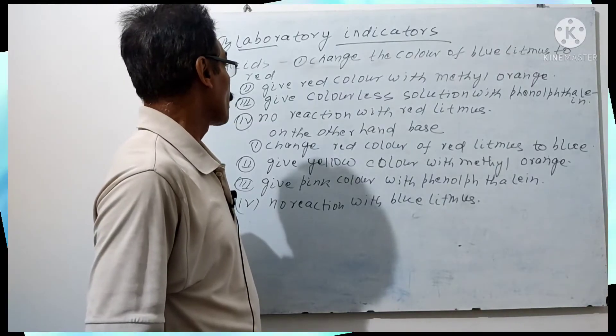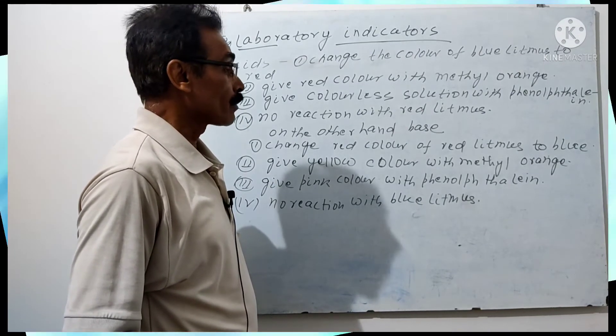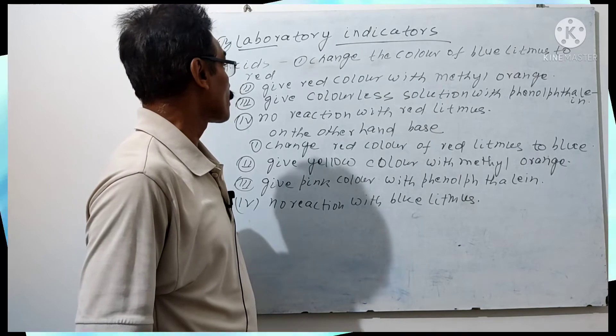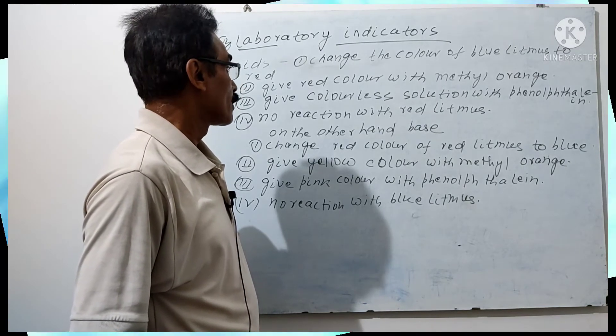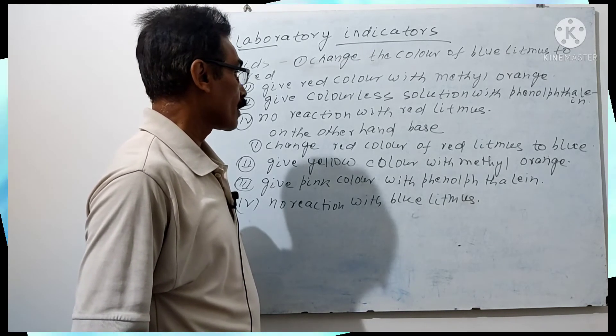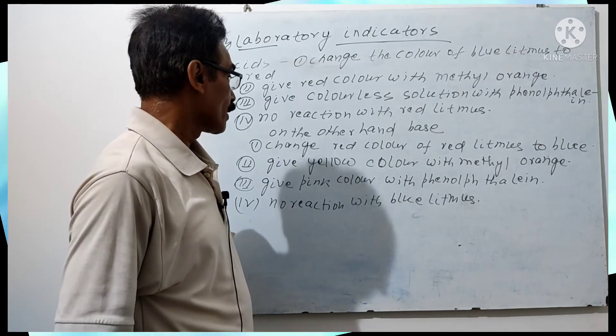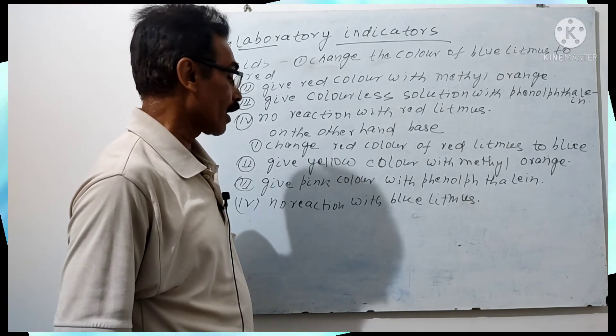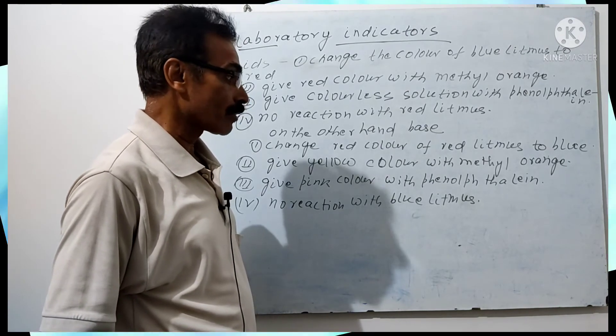The third indicator changes from red in acidic solution to green in basic solution. It will give yellow color with metallic color, give green color without any, and no reaction with blue.